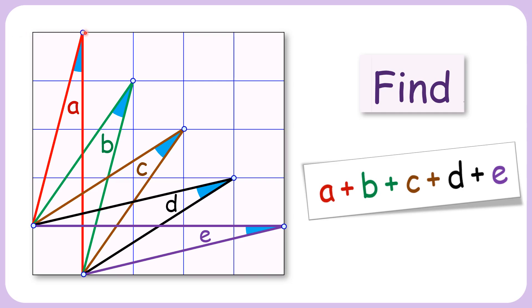In this interesting question, we're given a 5x5 square grid. In that grid, five points are selected and joined to form angles a, b, c, d, and e. Using this information, we have to find the sum of all these angles.